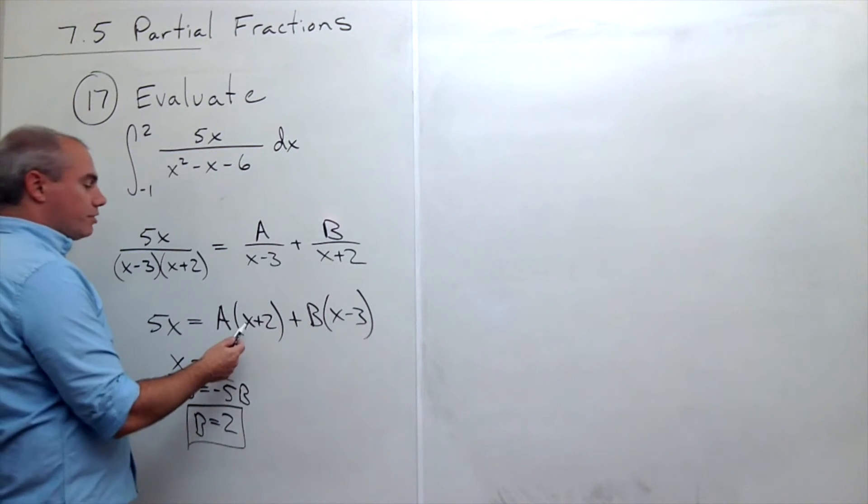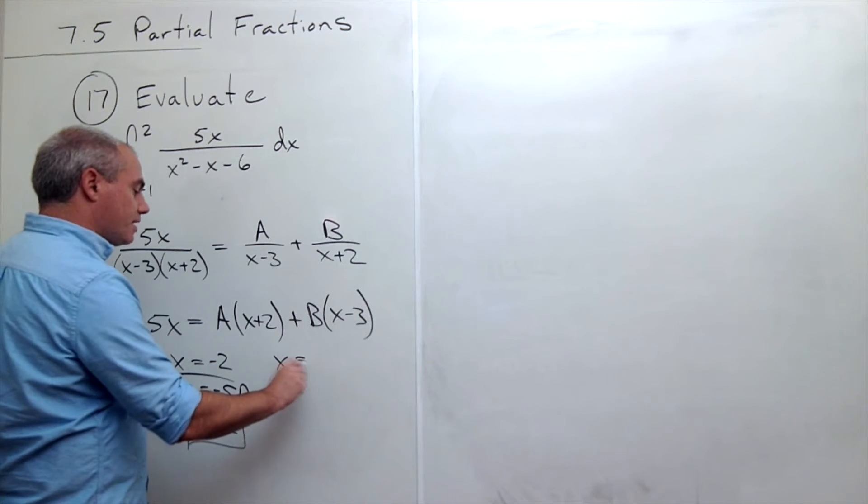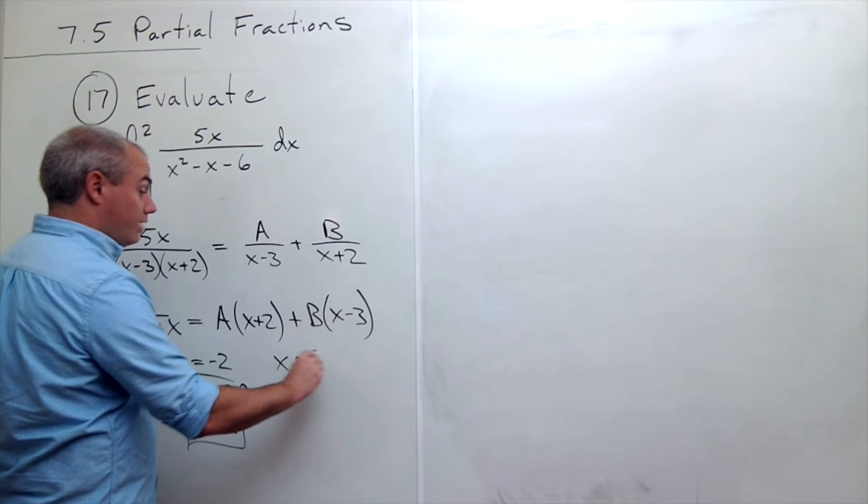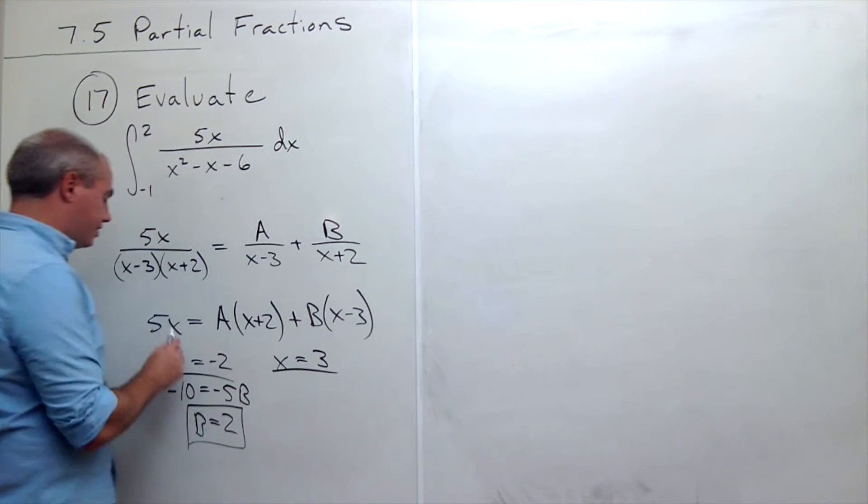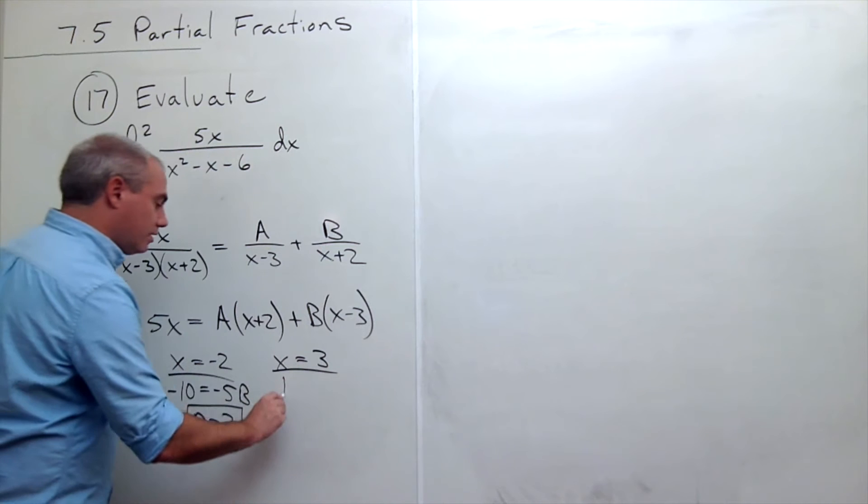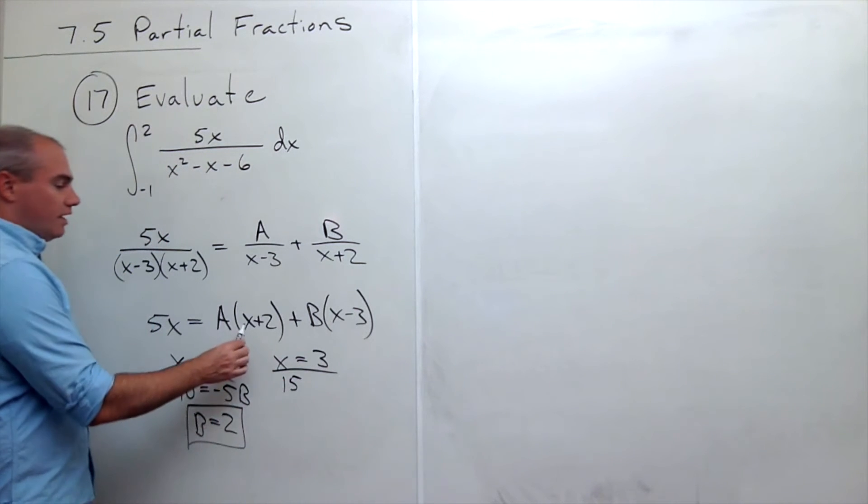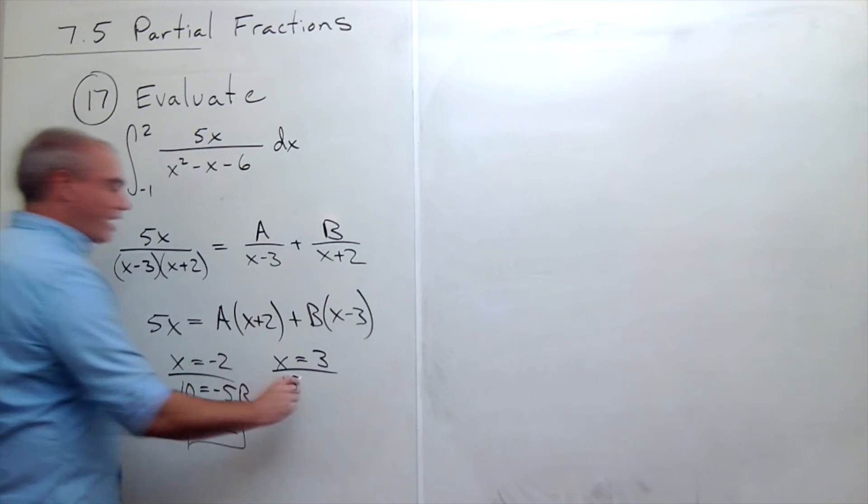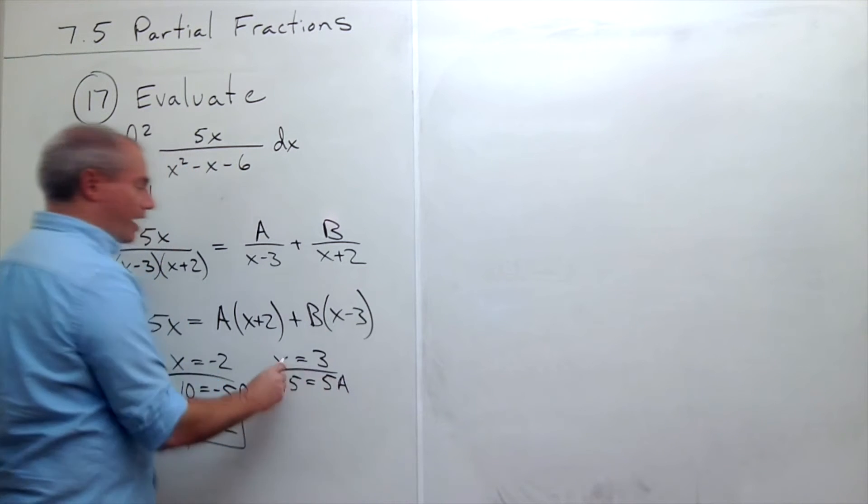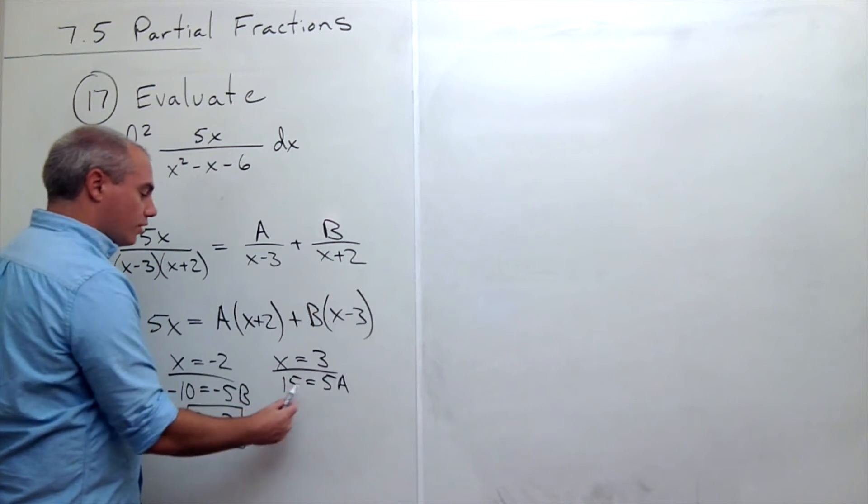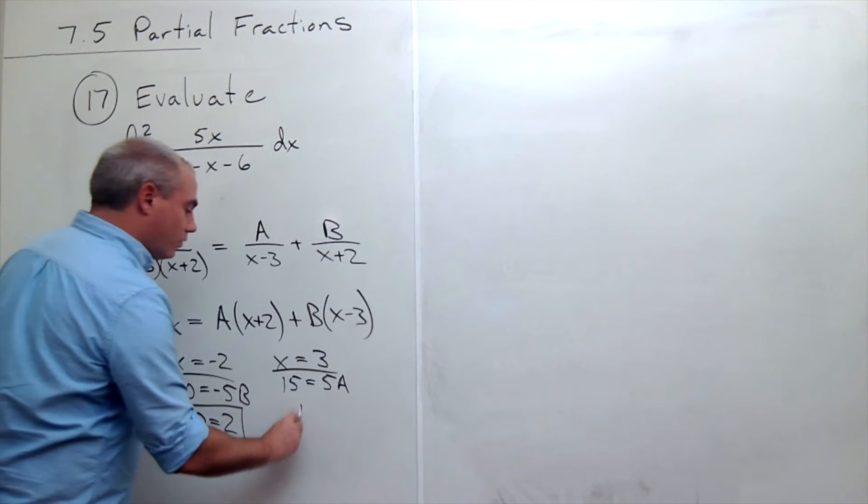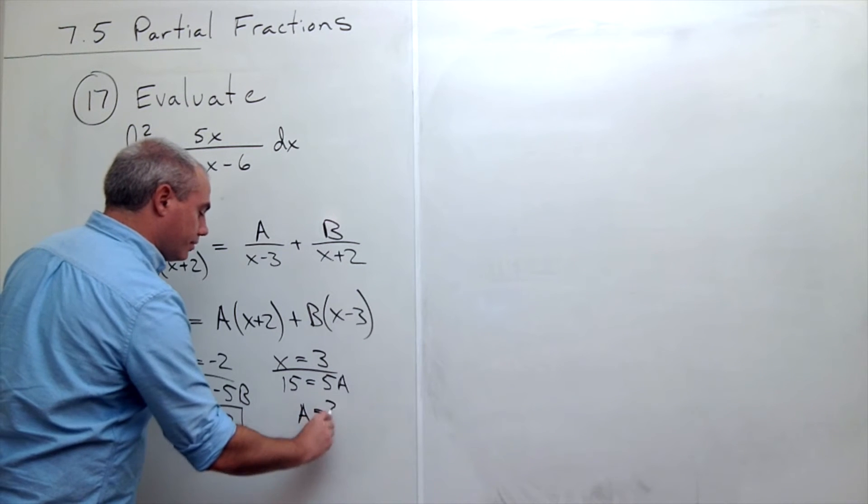Now we could also choose another value for x. Let's let x be equal to 3. If x is 3, I get 15 on this side. If x is 3, I get 5A. And if x is 3, this is 0. So I get 15 equals 5A, or A is equal to 3.